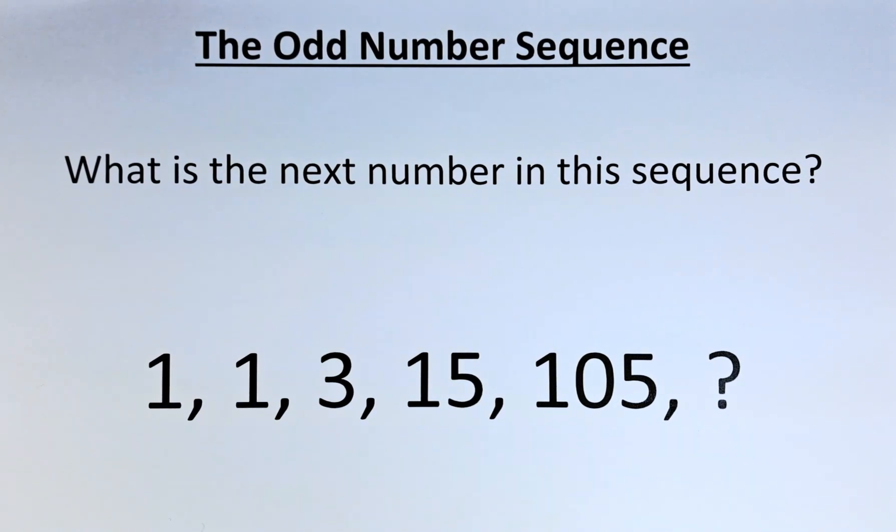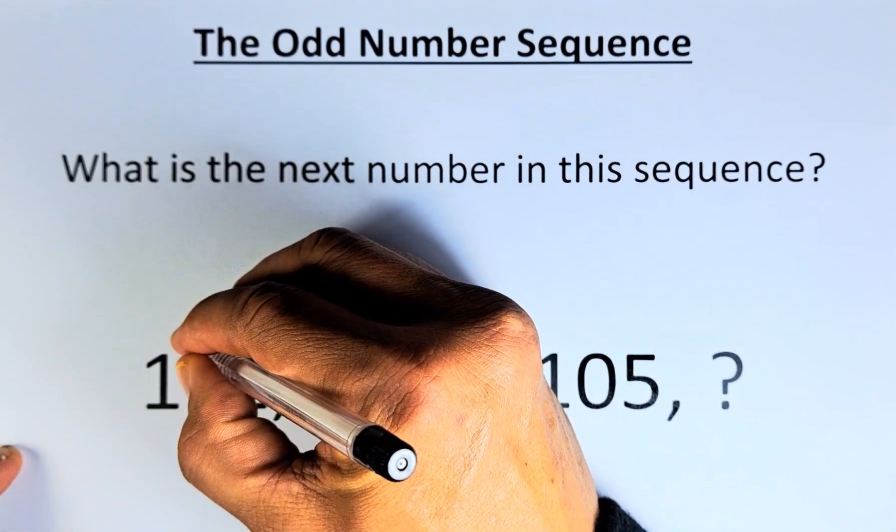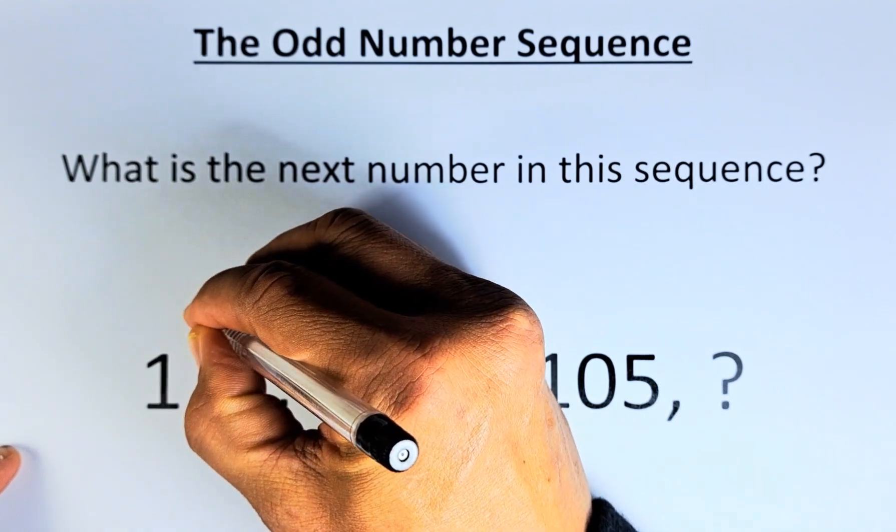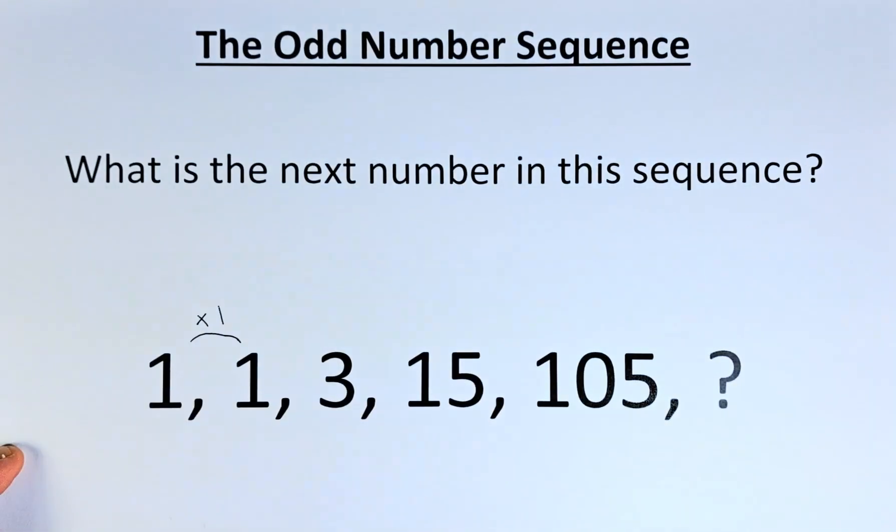As the title implies, it's the odd number sequence, and let's try to solve this puzzle. So from 1 to 1, it's very simple. We are going to multiply by 1. So 1 multiplied by 1 will give you 1.